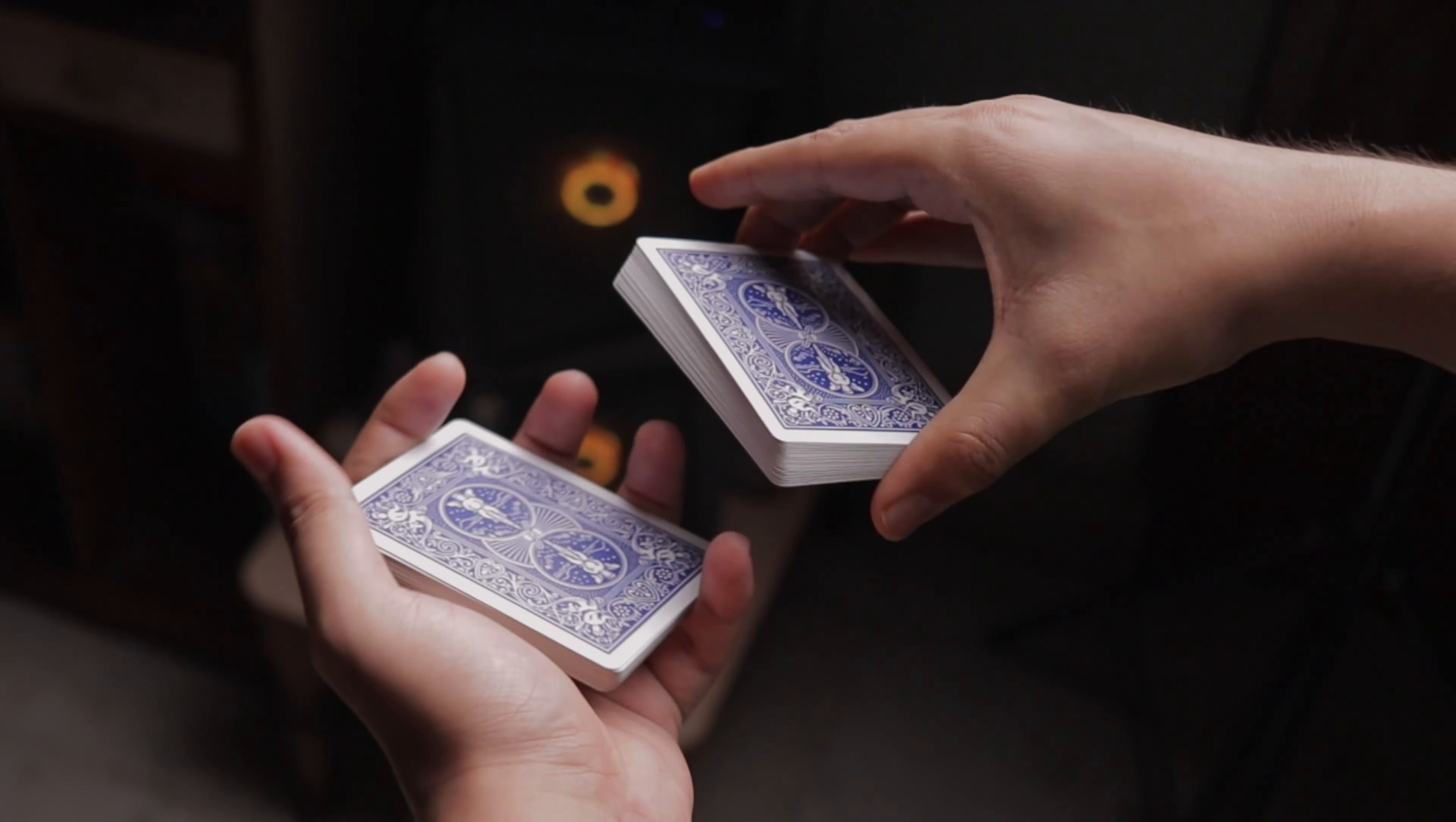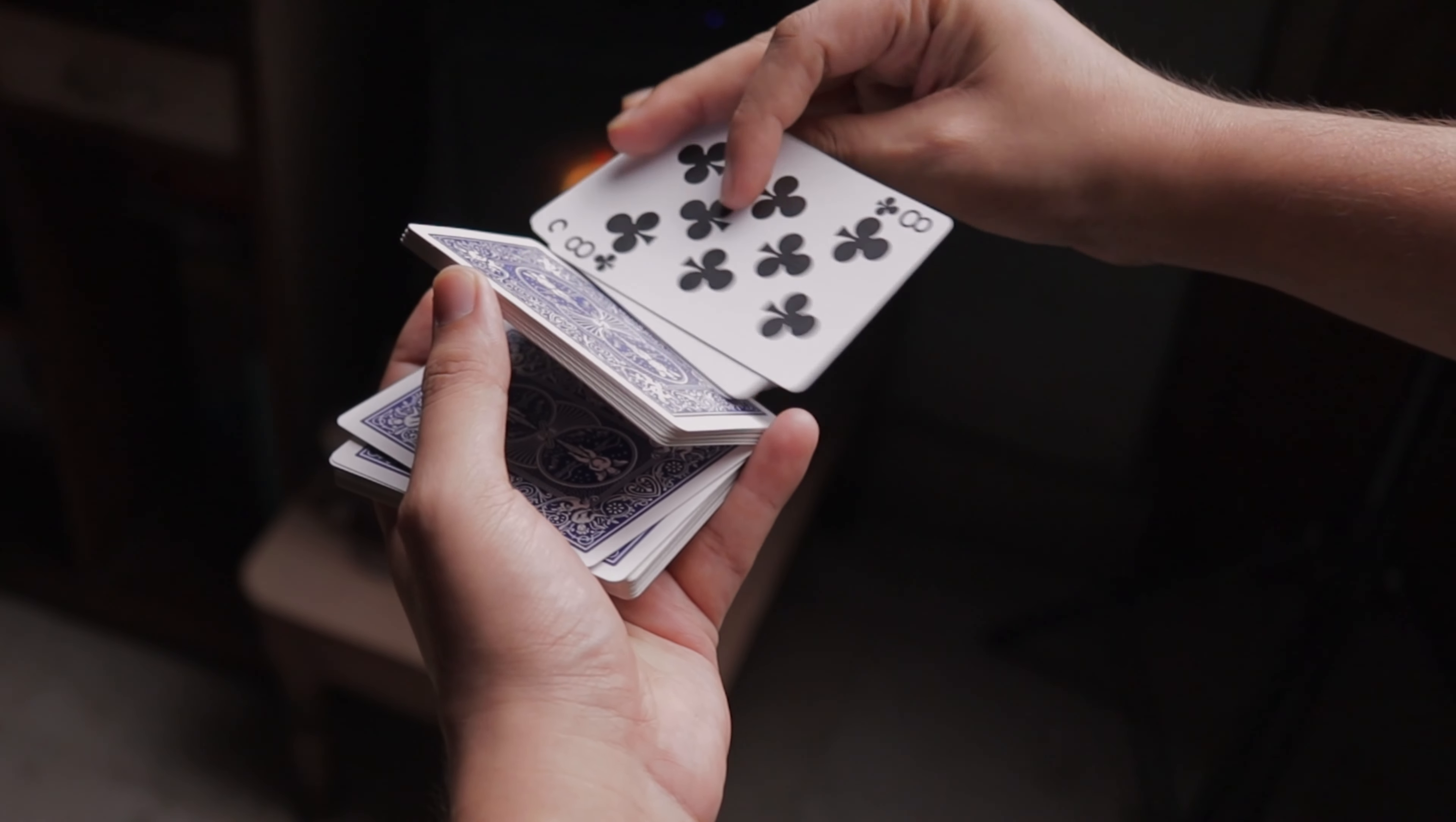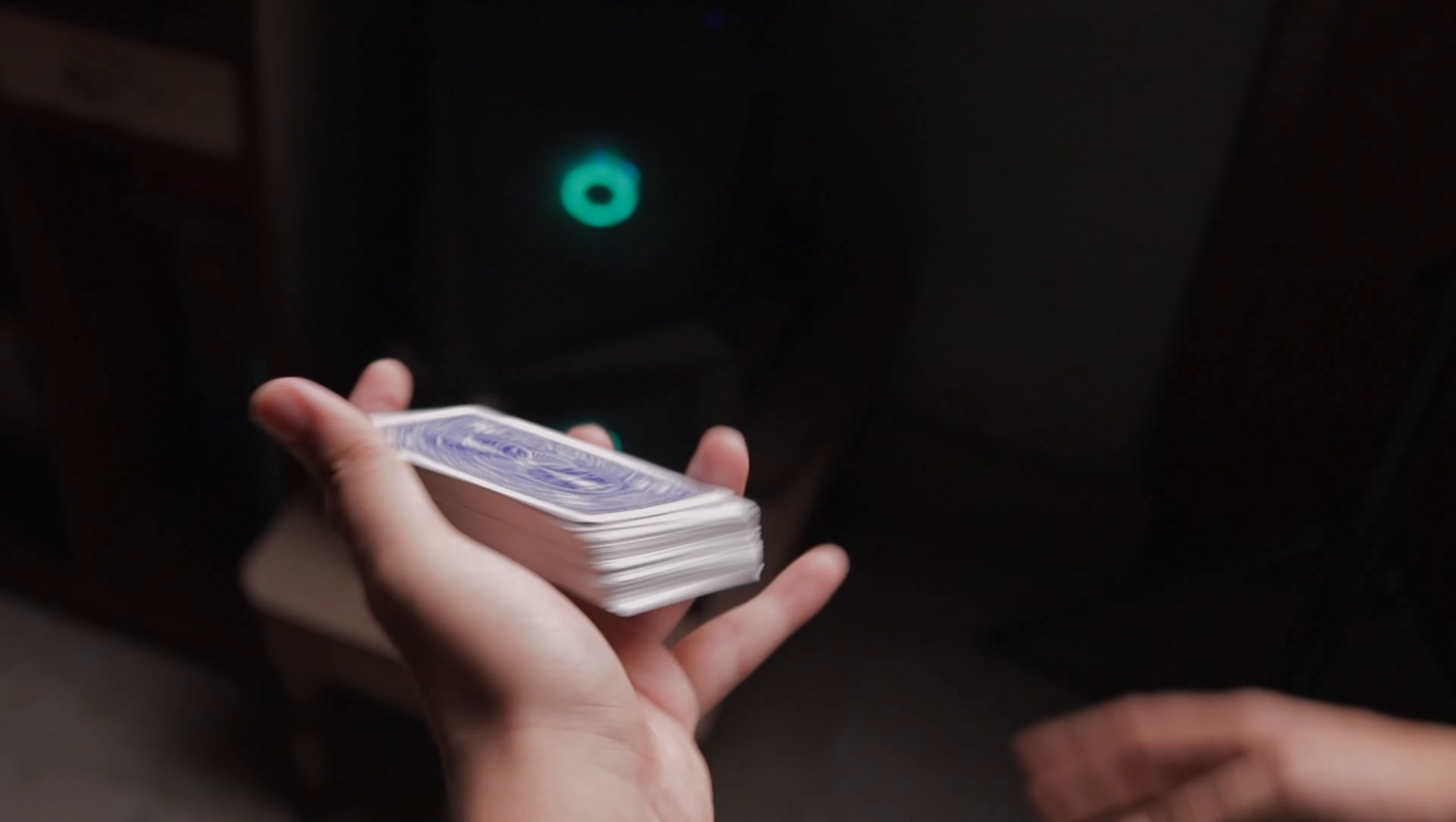One swing cut, second swing cut out-jogged, third swing cut. Then you're going to pull the middle packet out, swing it out, you raise the top packet, you flip the middle packet over, you raise the bottom packet for the charlier cut.